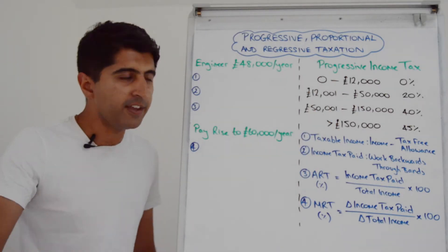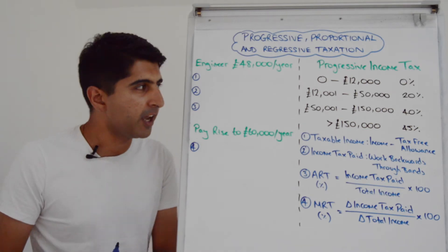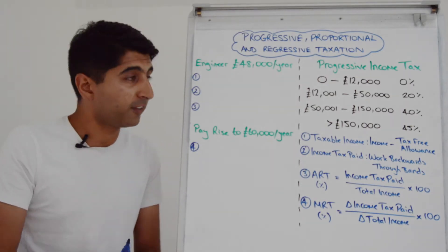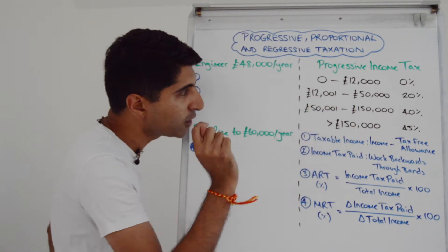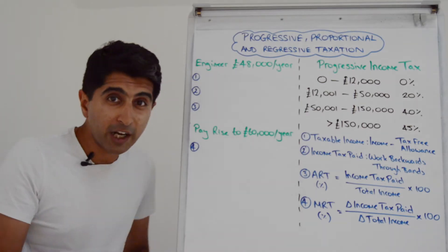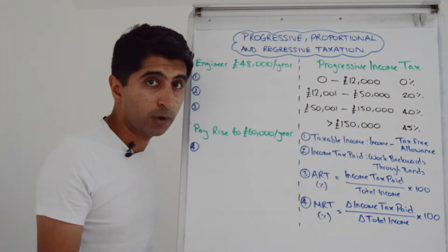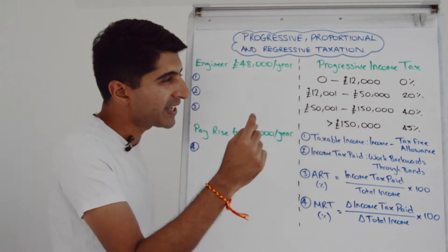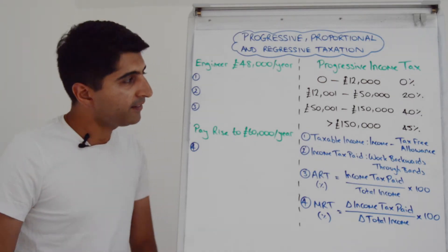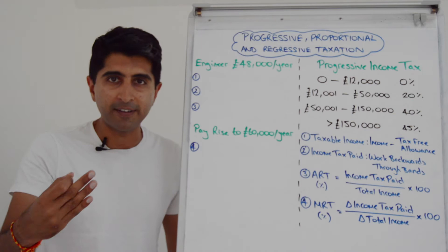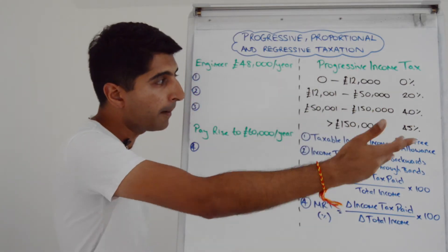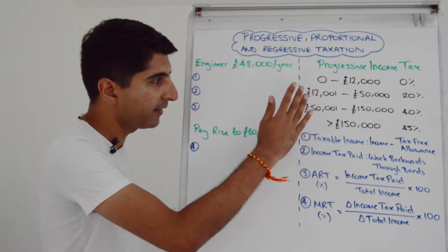Take someone earning £14,000 a year — they're going to end up in the 20% bracket, but not all of the £14,000 is taxed at 20%. Just the income between £12,000 and £50,000 is taxed at that rate. For someone earning £14,000, that's only £2,000 of income taxed at 20%; the first £12,000 still falls within the tax-free allowance. Similarly, a worker earning £60,000 a year is in the 40% bracket, but only £10,000 — the income above £50,000 up to their salary — is taxed at 40%.